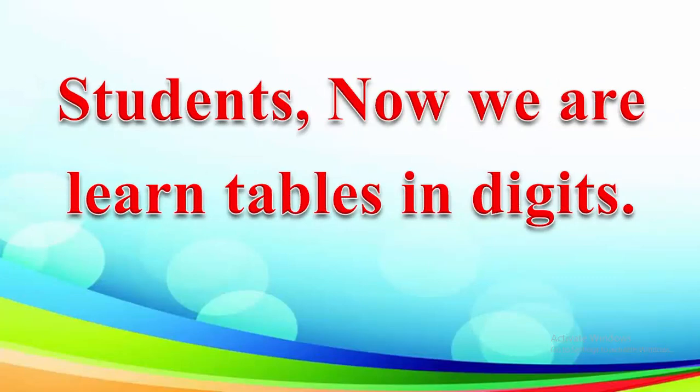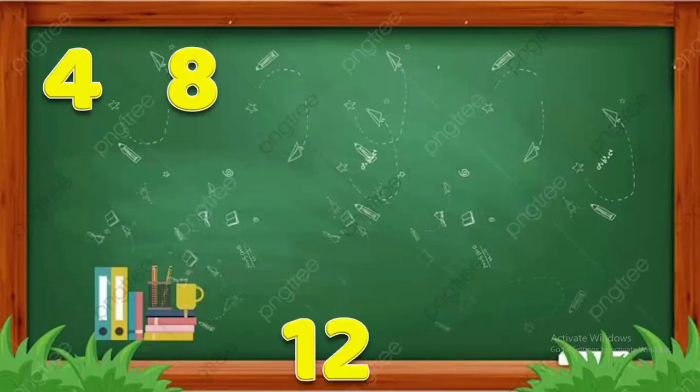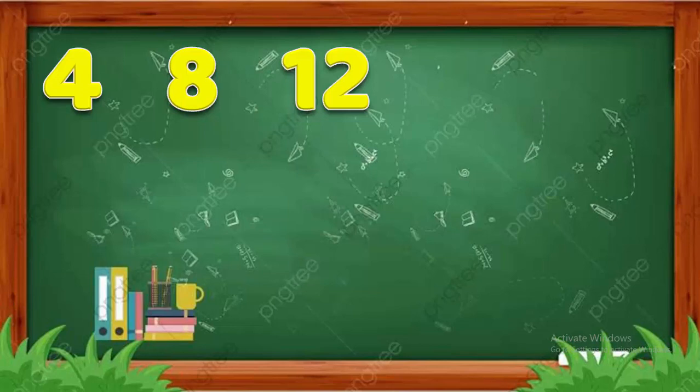Students, now we are learning the table in digits. 4 ones are 4. 4 twos are 8. 4 threes are 12. 4 fours are 16.